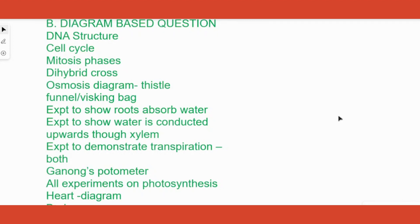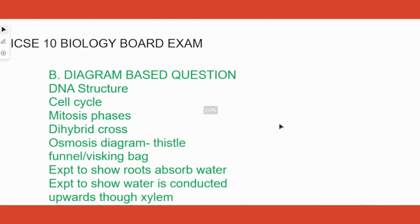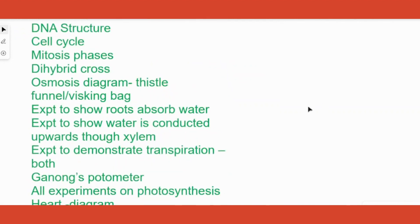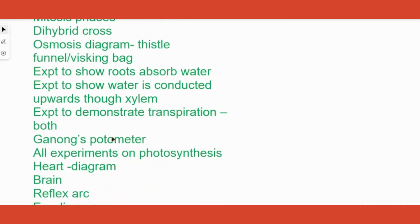Then experiments, our favorite part for this diagram based, that is experiment to show water is absorbed by roots, conducted through xylem, the one where transpiration is shown using a plastic bag around the plant or using Ganong's potometer.